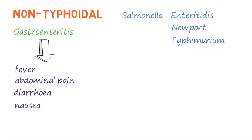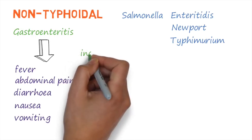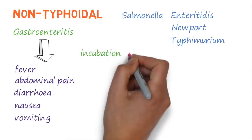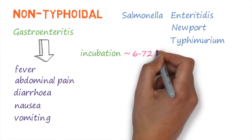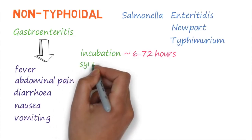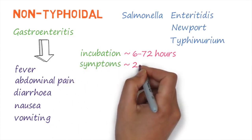Symptoms also include diarrhea, nausea, and sometimes vomiting. These symptoms usually occur between 6 to 72 hours after being exposed to the bacteria and can last for about 2 to 7 days.